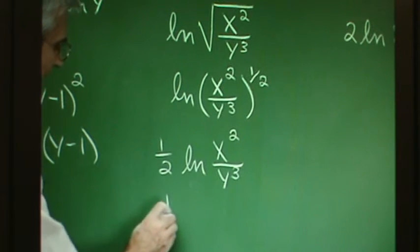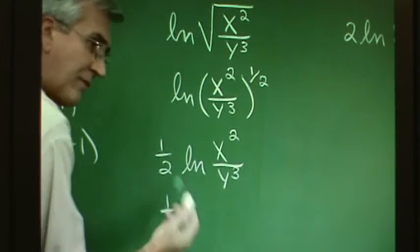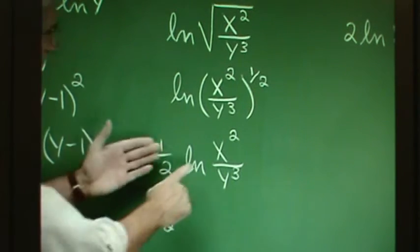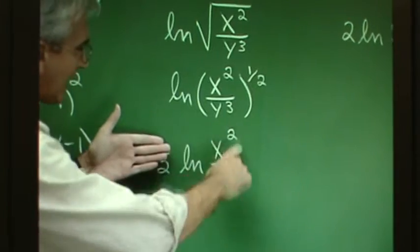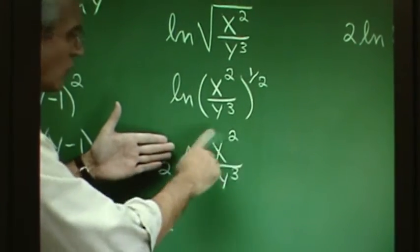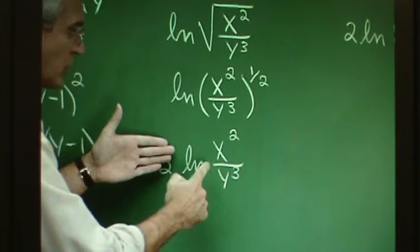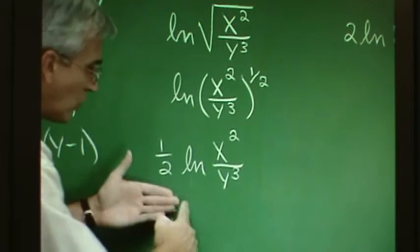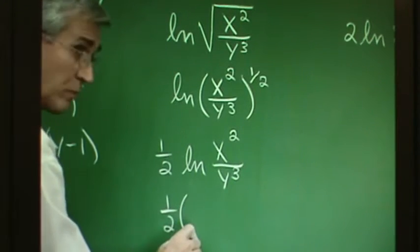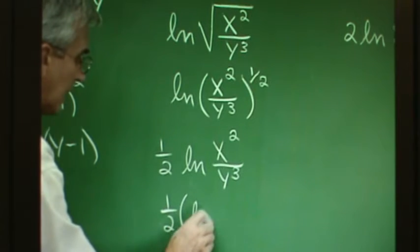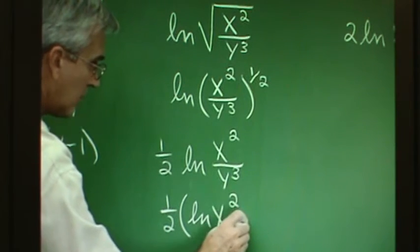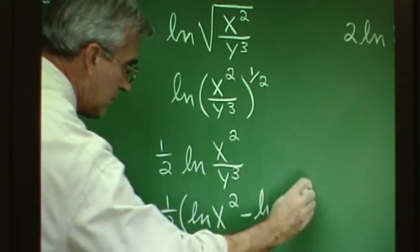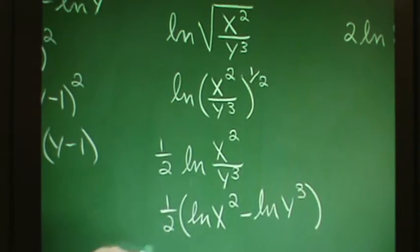Now we have the natural log of a quotient, so we get the difference of logarithms. This becomes one-half times, and here it's important to introduce parentheses: one-half times (ln numerator minus ln denominator). We want to take half of those two terms — it's one-half times ln x squared minus ln y cubed. We can go further with this problem.